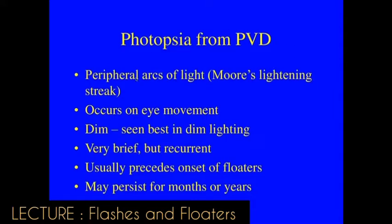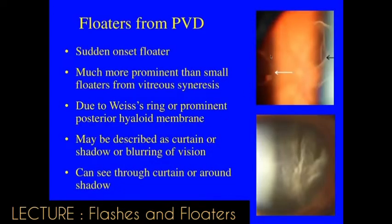Flashing lights from vitreous detachment tend to be peripheral arcs of light, like a lightning streak. They occur with eye movement, are best seen in dim lighting, are very brief but recurrent, and usually precede the onset of floaters. Floaters from a PVD — you can see the Y-string in front of the optic disc — as the separated jelly moves, it casts a shadow on the retina, causing a moving object in the field of vision. It may be described as a curtain, shadow, or blur, but the patient can see through it.